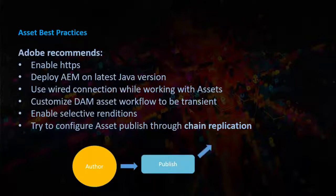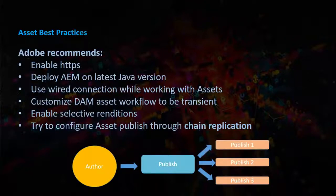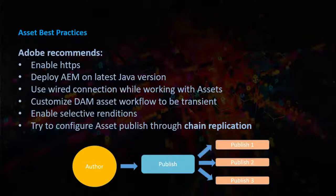Here is a pictorial representation of chain replication. The assets are getting published from a single author to a single published instance, and this published instance then pushes the assets from one published instance to multiple published instances.